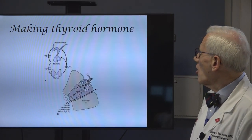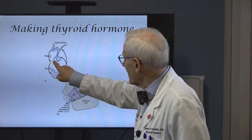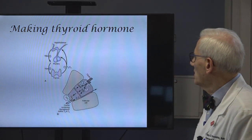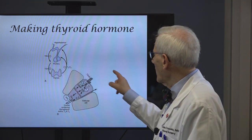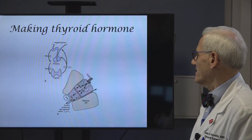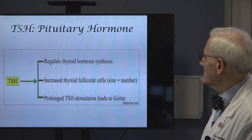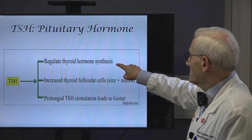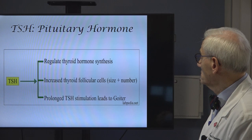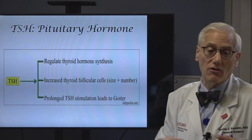How does your body know that you have enough thyroid hormone in the blood to have normal metabolism? There's a little gland at the base of the brain called the pituitary gland. It makes its own hormone called thyroid stimulating hormone, or TSH, that signals the thyroid to take up more iodine, make more thyroid hormone, store it in the colloid, and then release it. TSH regulates thyroid hormone synthesis — if you have more TSH, you're going to make more thyroid hormone. It's going to increase the size and number of the follicular cells. In short, it makes thyroid tissue grow, and if it's up for a long, long time, it's going to lead to a goiter.